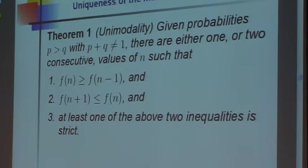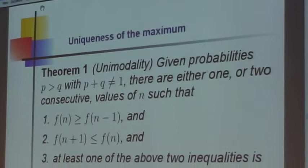Okay, so the theorem is: given probabilities p > q, and p + q ≠ 1—by the way, I should say p + q = 1 is excluded here because it's easier. We know everything; it's very explicit in that case. But for p + q ≠ 1, there are either one or two consecutive values of n such that f(n) ≥ f(n-1) and...